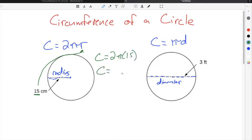Then you take your circumference formula and you multiply 2 times π times 15, and you will get 417.12 centimeters for the radius.